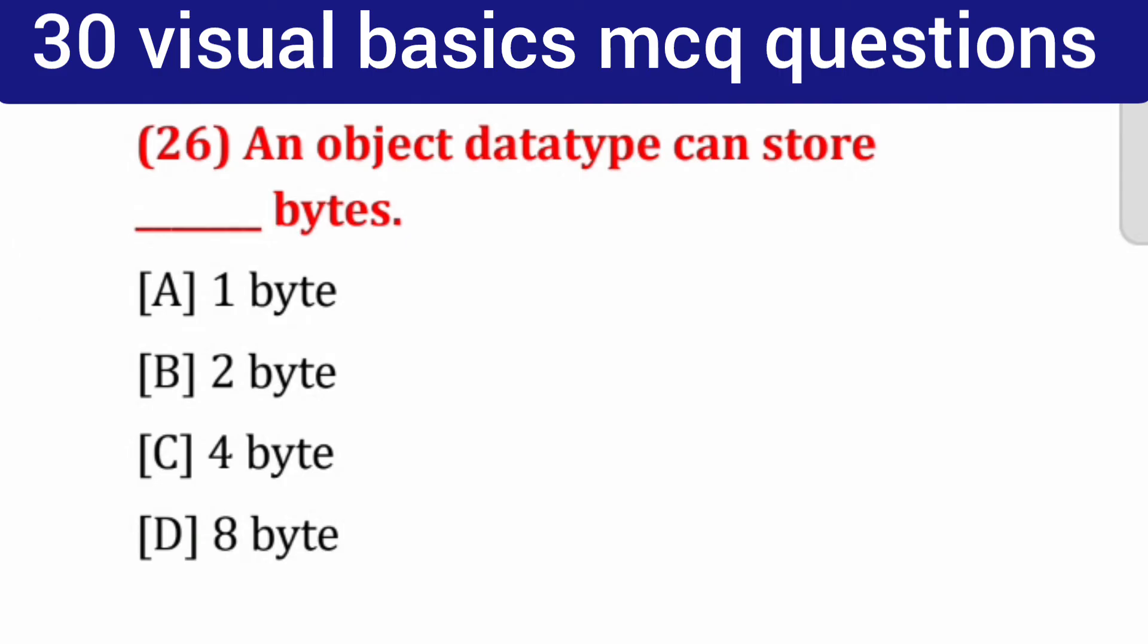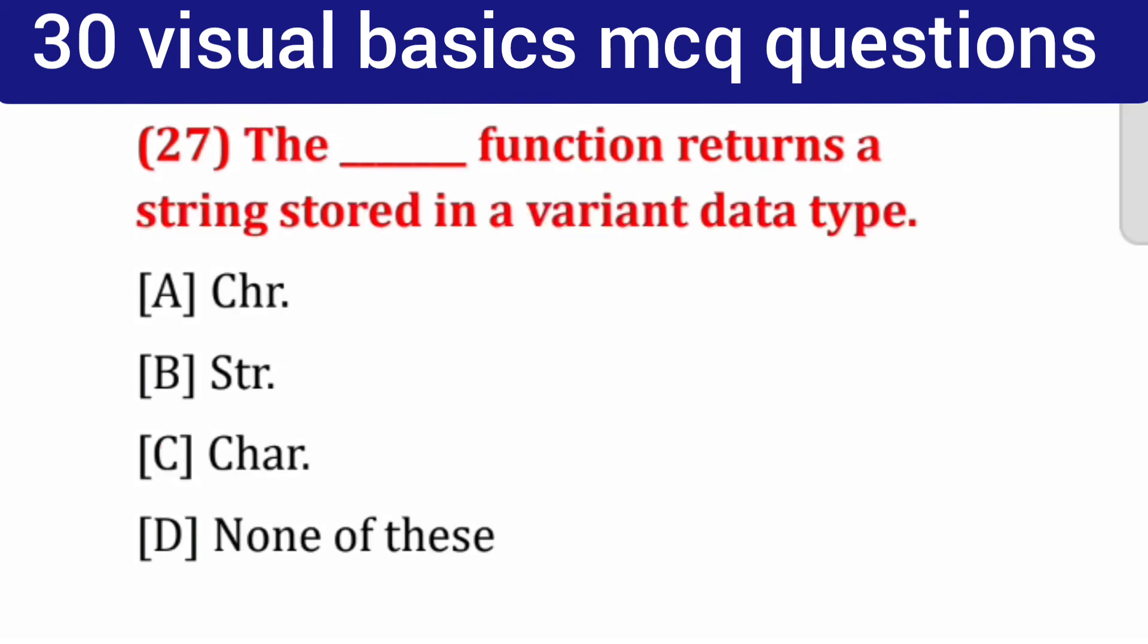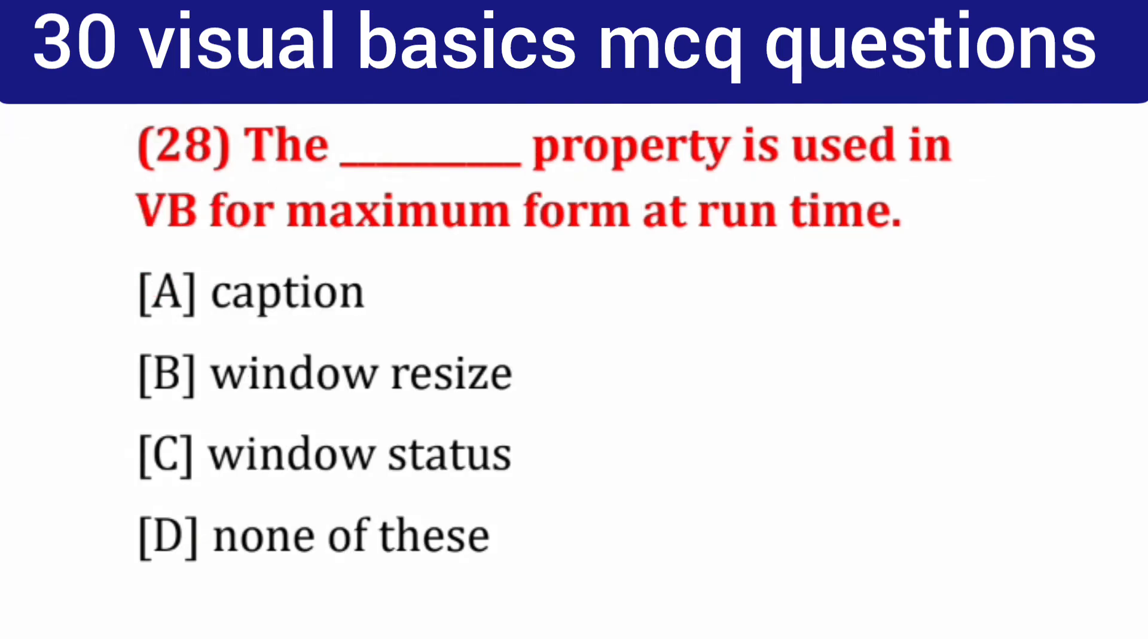Question number 27: The ___ function returns a string stored in a variant data type. Options: Chr, Str, Char, none of these. Correct answer is Chr.